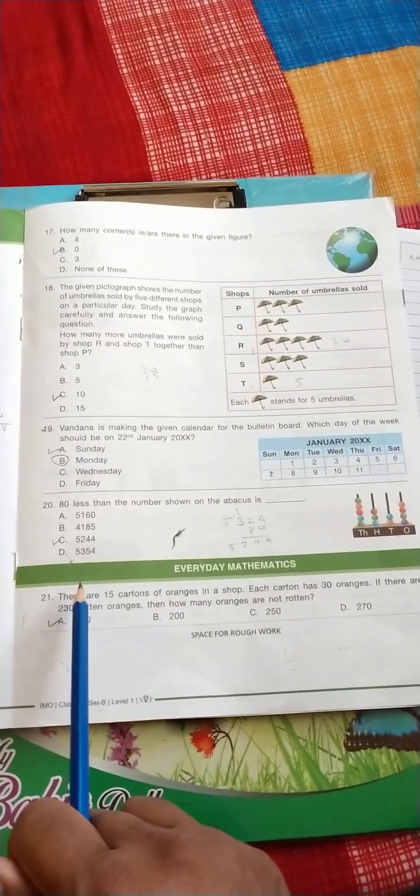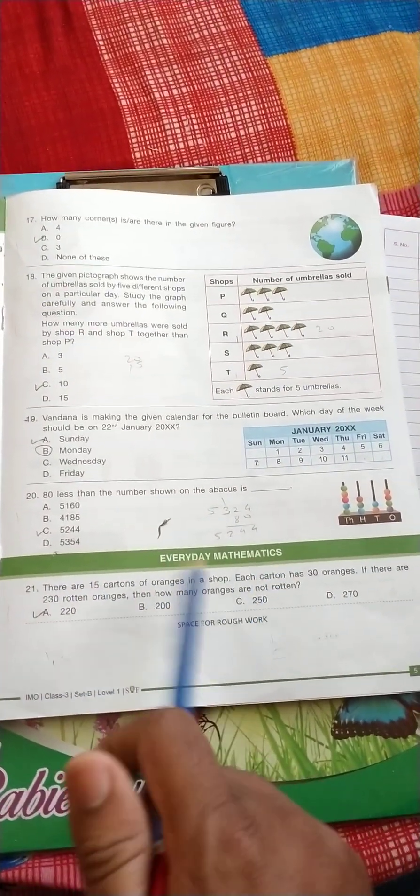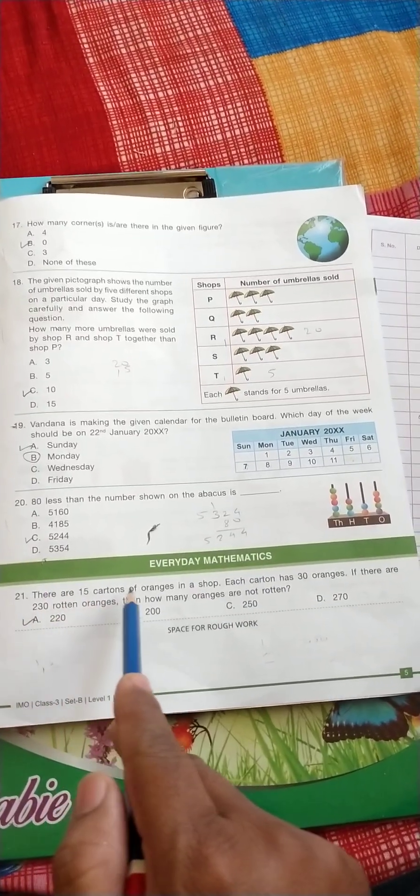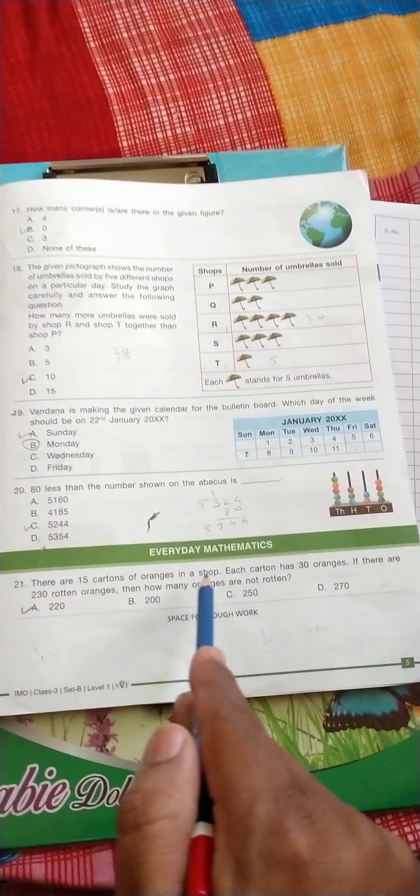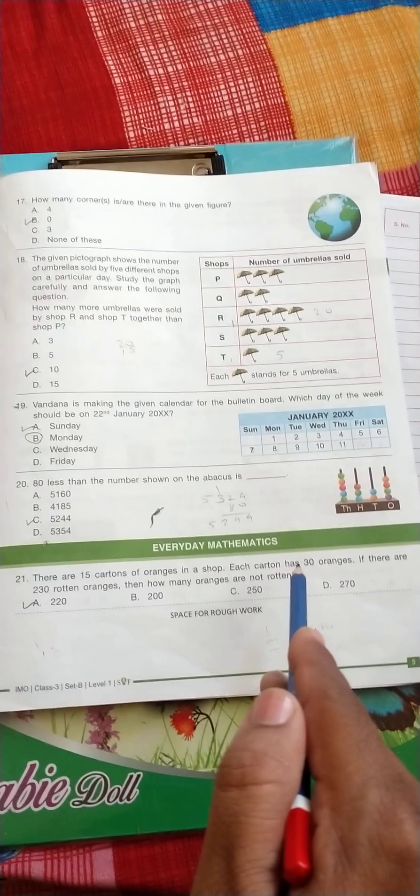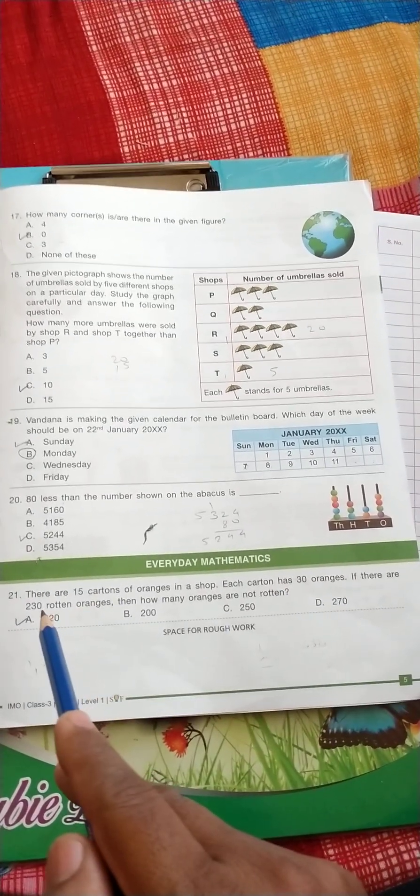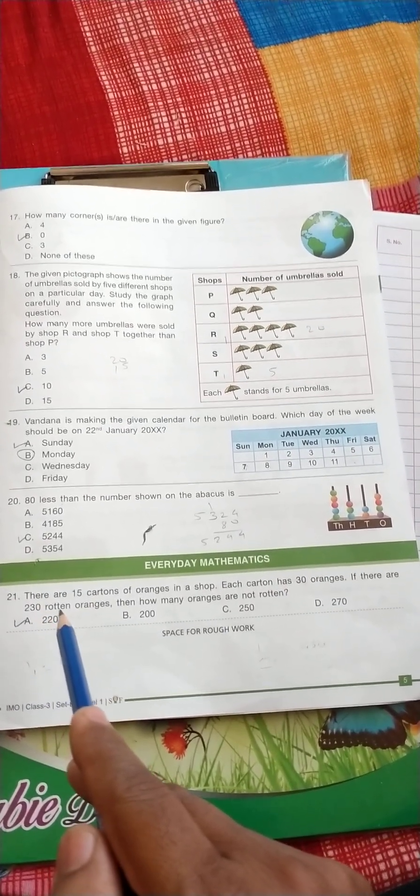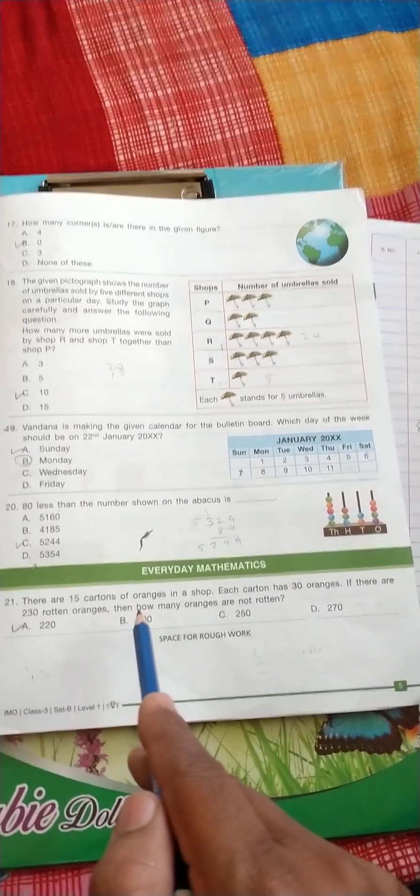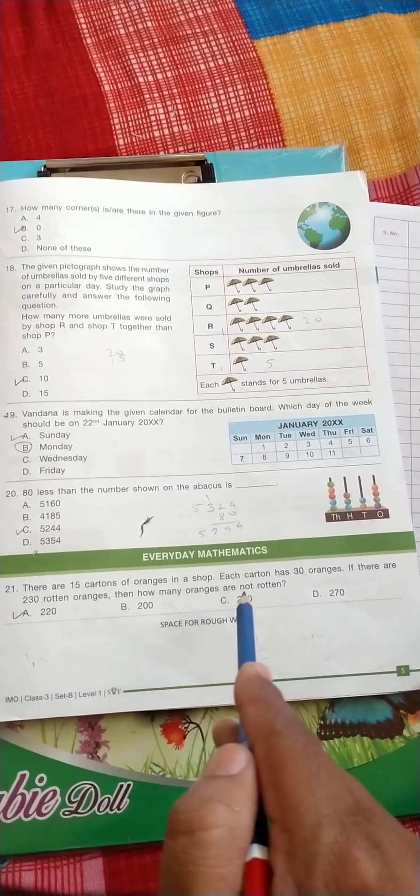Question number 21, everyday mathematics: there are 15 cartons of orange in a shop, each carton has 30 oranges. If there are 230 rotten oranges, then how many oranges are not rotten?